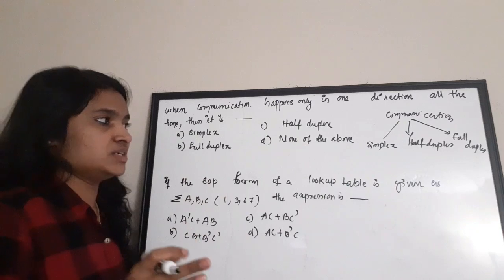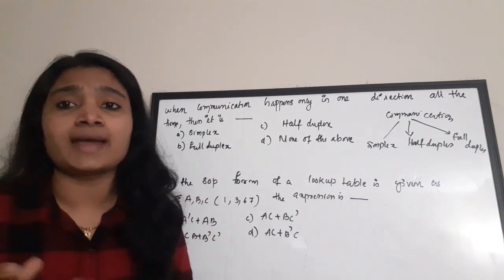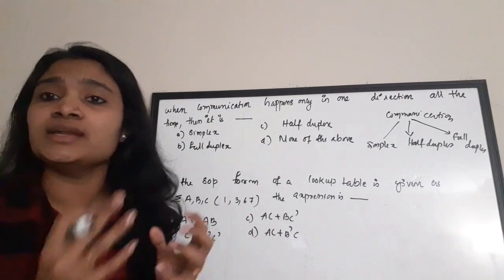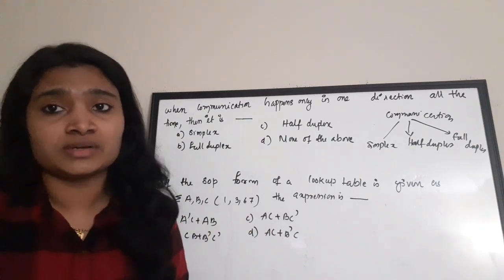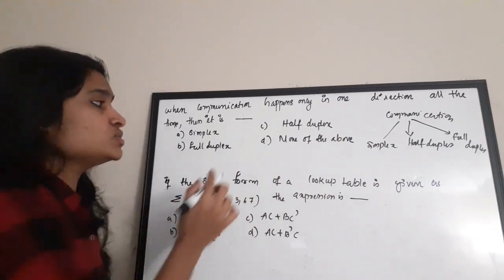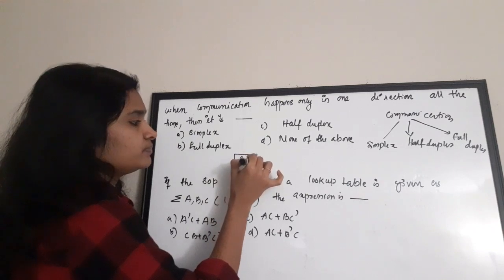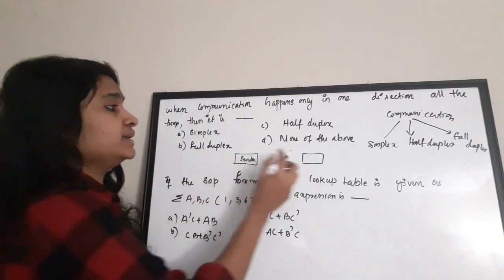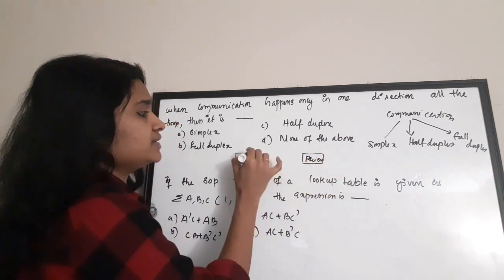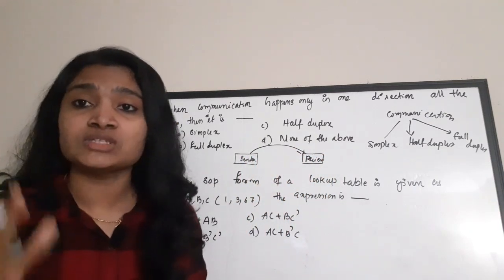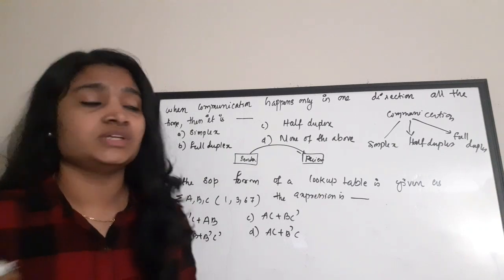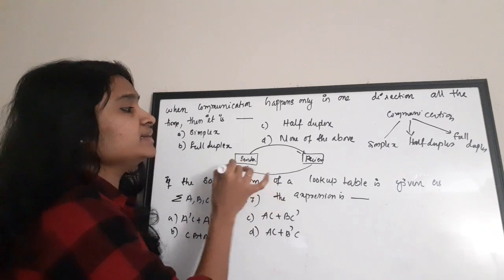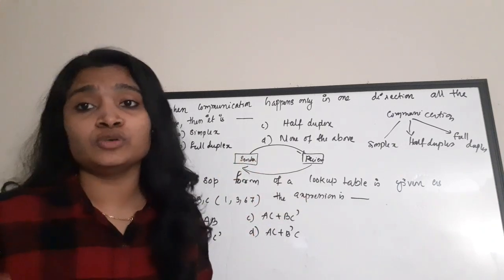Simplex communication means communication happens only in one direction. For example, a radio: the radio sends messages, but we cannot talk back to it. In simplex mode, there is a sender and a receiver — the sender sends data to the receiver, and the receiver only receives. There is no return communication.